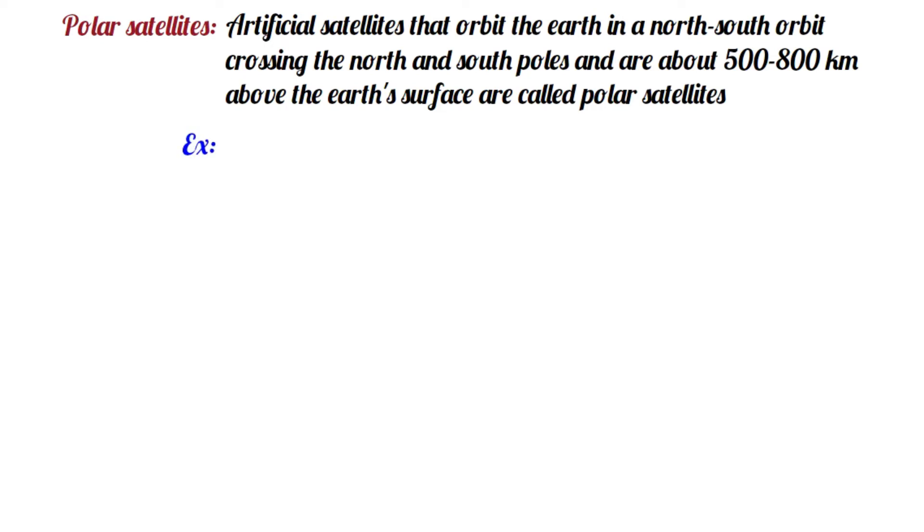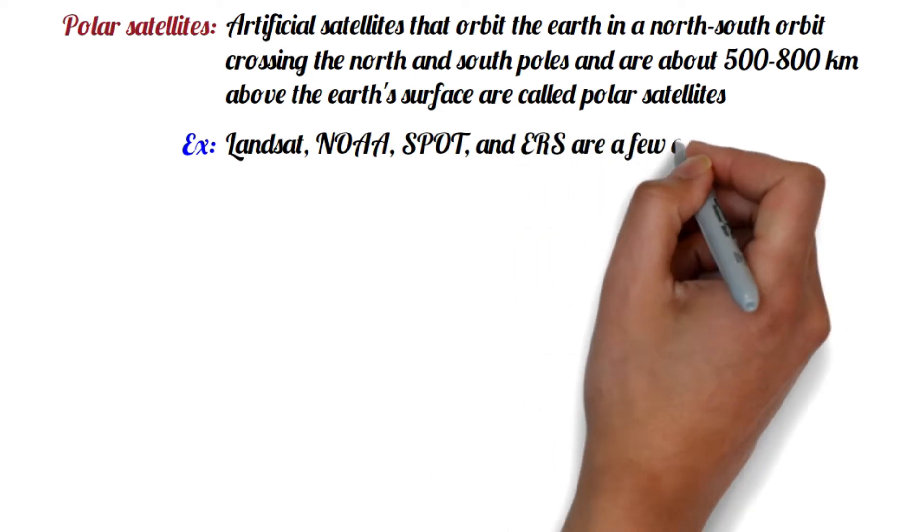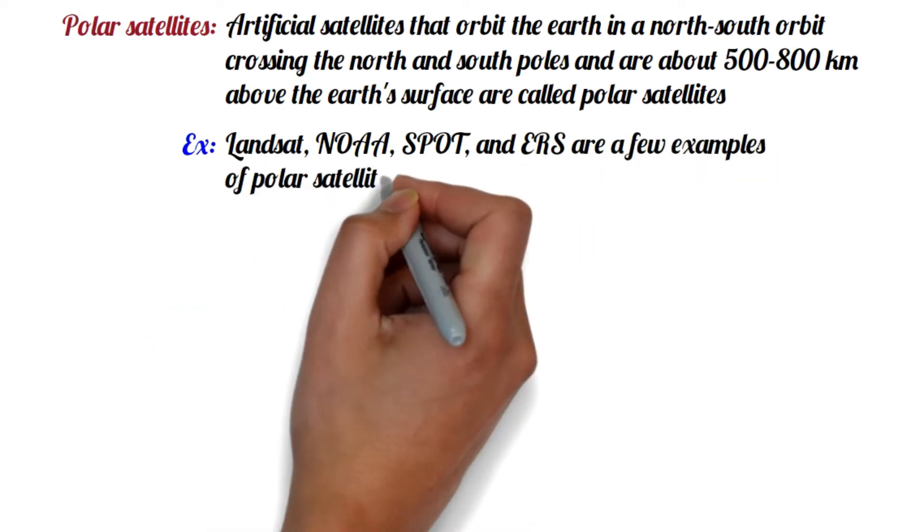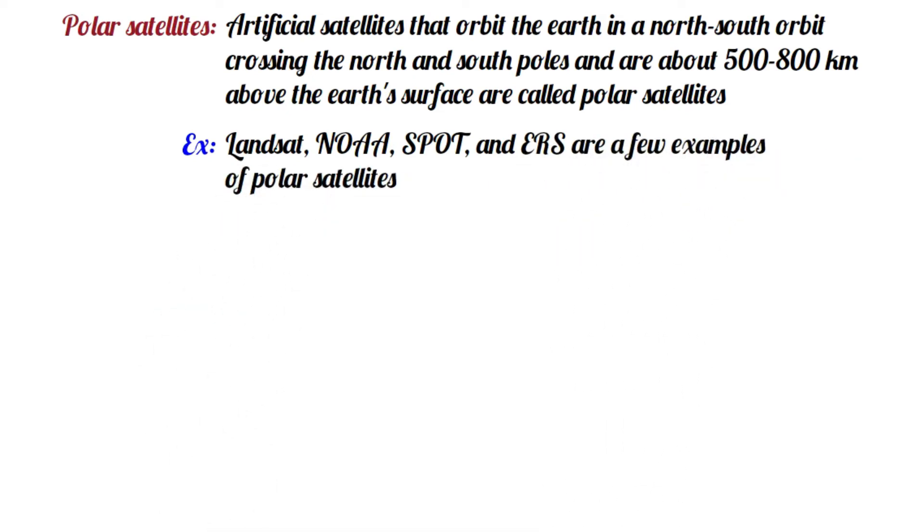For example, Landsat, NOAA, SPOT, and ERS are a few examples of polar satellites. These are low-orbit satellites.